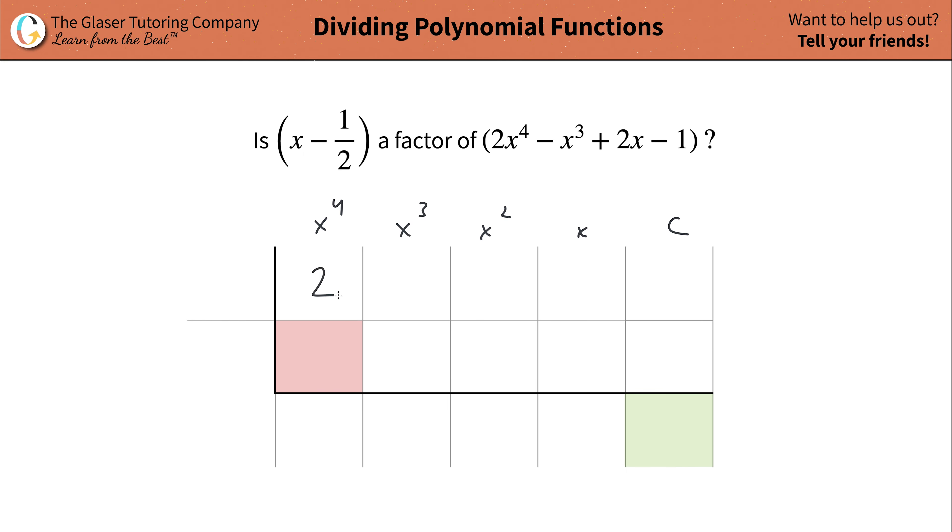So here x to the fourth is a two, right? The coefficient of the x cubed term is going to be a negative one, right? There's a one in front of that, and it's negative.